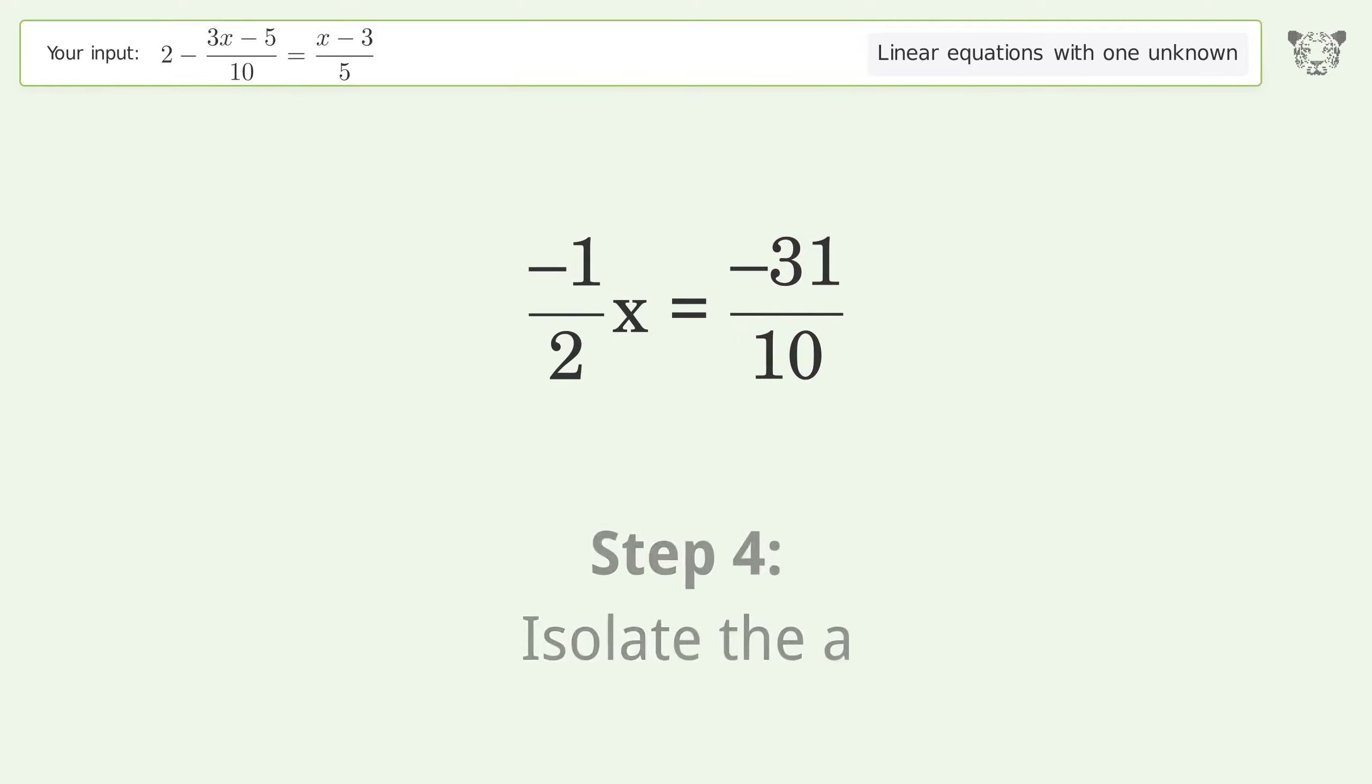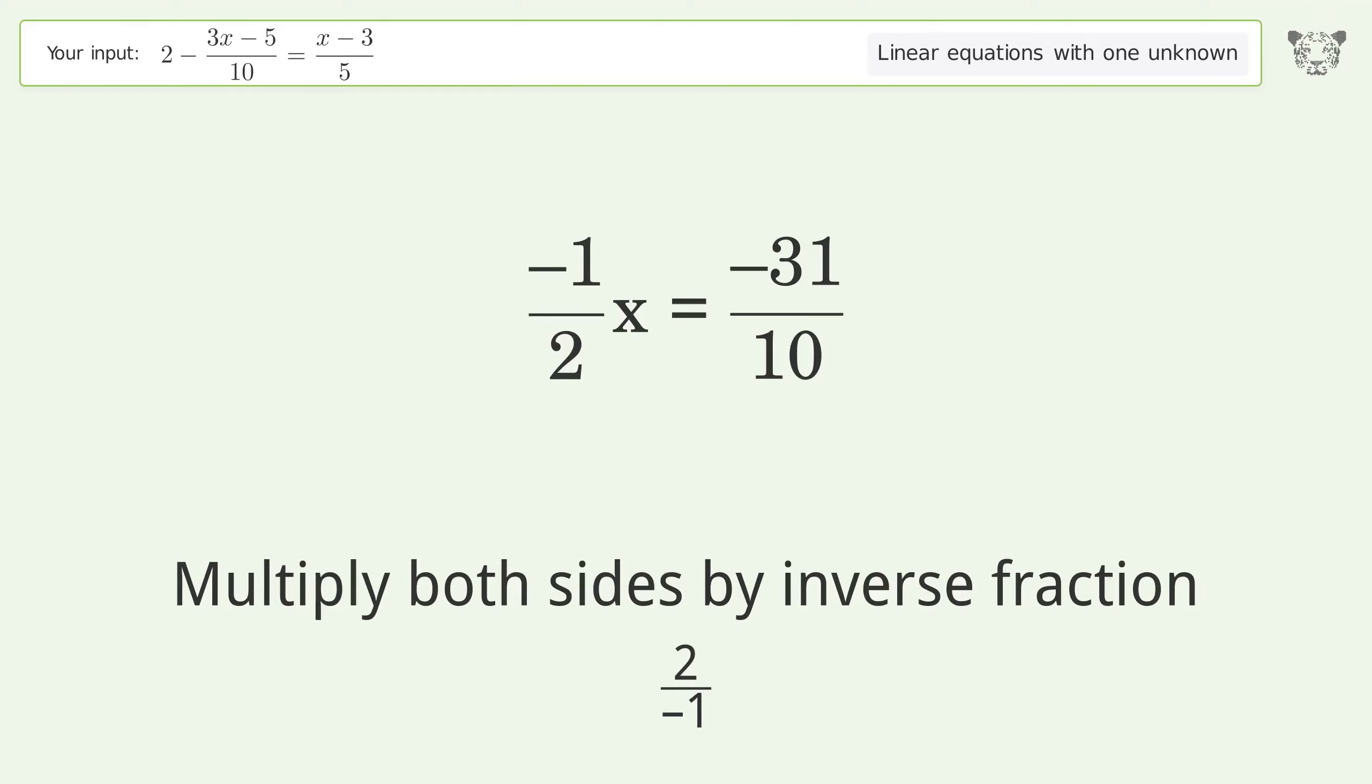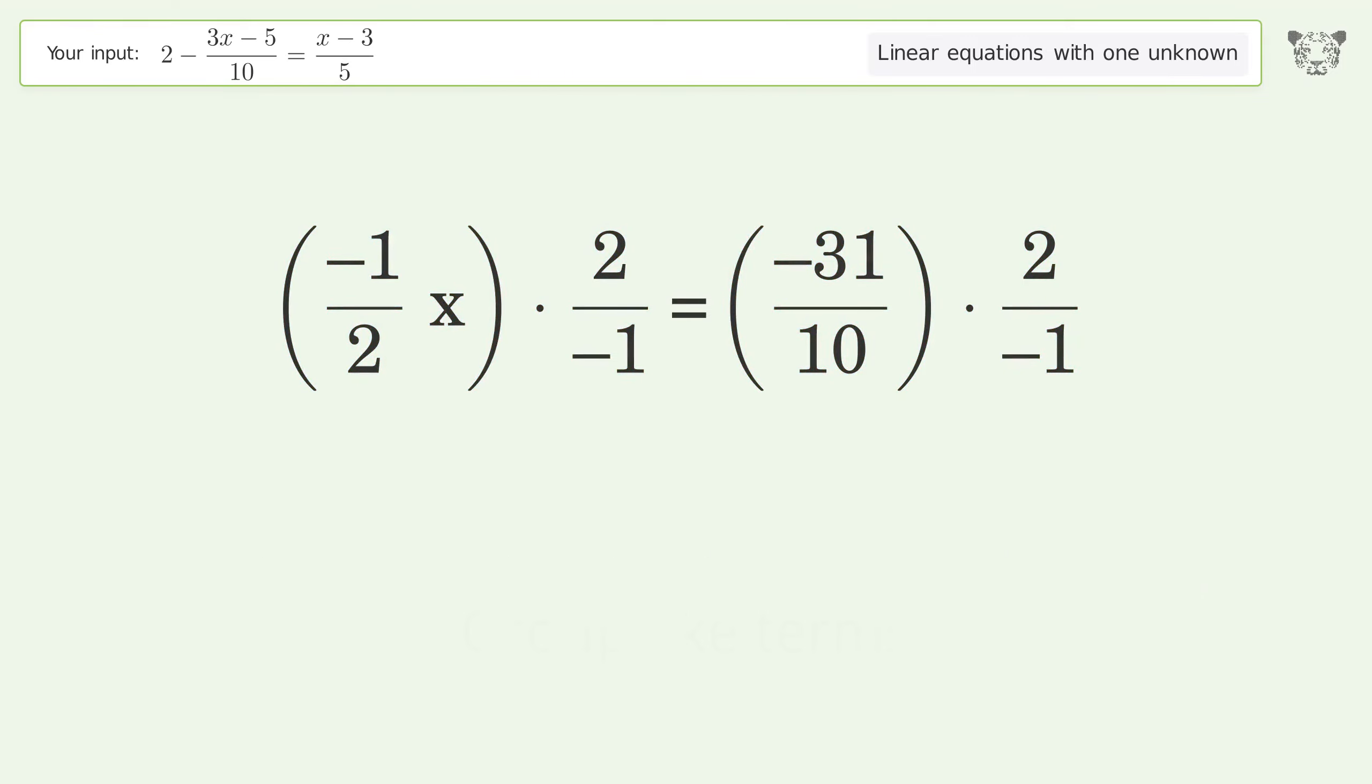Isolate the x. Multiply both sides by inverse fraction 2 over negative 1. Group like terms.